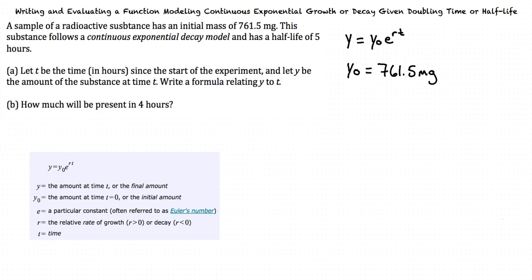Well, it says the half-life is 5 hours, so our t is going to be 5. And since it's a half-life, wouldn't y equal 1 half times y sub 0? That's exactly right. Because this is an exponential decay problem, our y value after some time t is going to be less than our initial value.